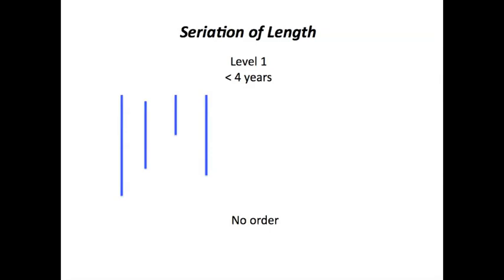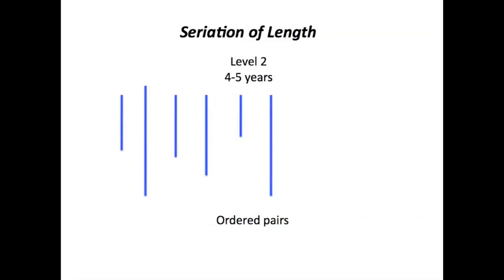Let's look at seriation of length. Piaget broke this down into at least four or five levels. Level 1 occurs in children under four years of age, and you have really no order when they're asked to take 10 little sticks of differing lengths — maybe differing by a quarter of an inch. They just rank them out with no idea what you're talking about. When they get to four or five, they'll rank them, but generally they'll only compare two at a time, one to another — here's a type of ordered pairs that might have been developed by a four or five-year-old.